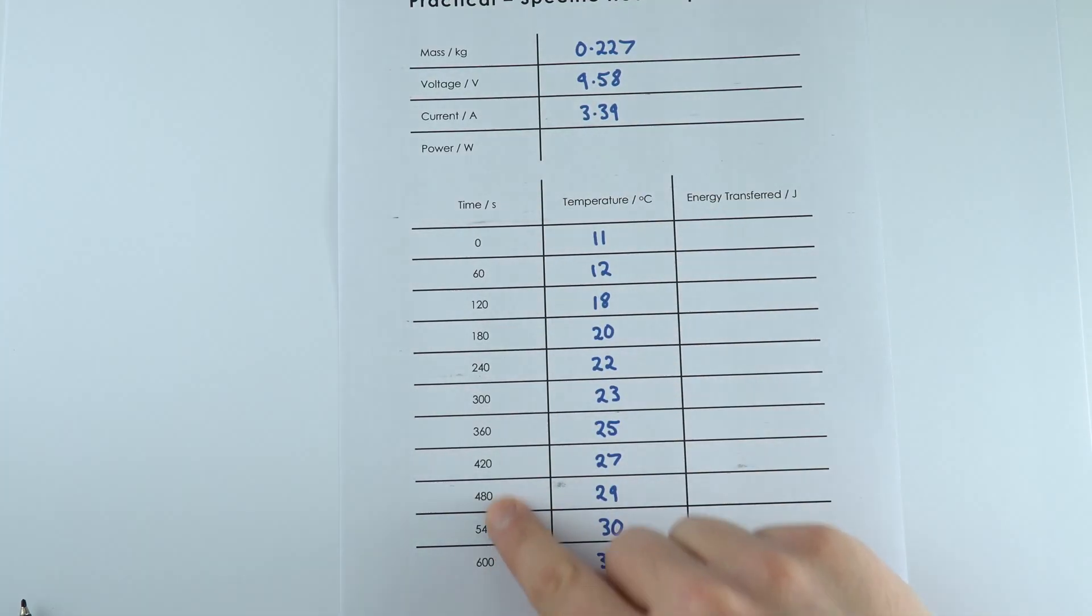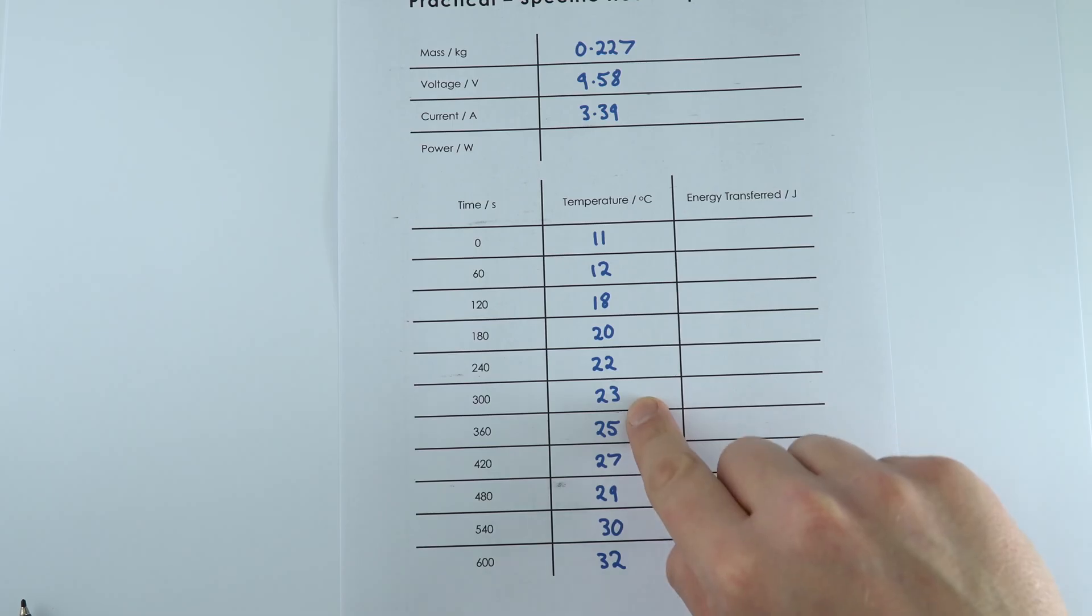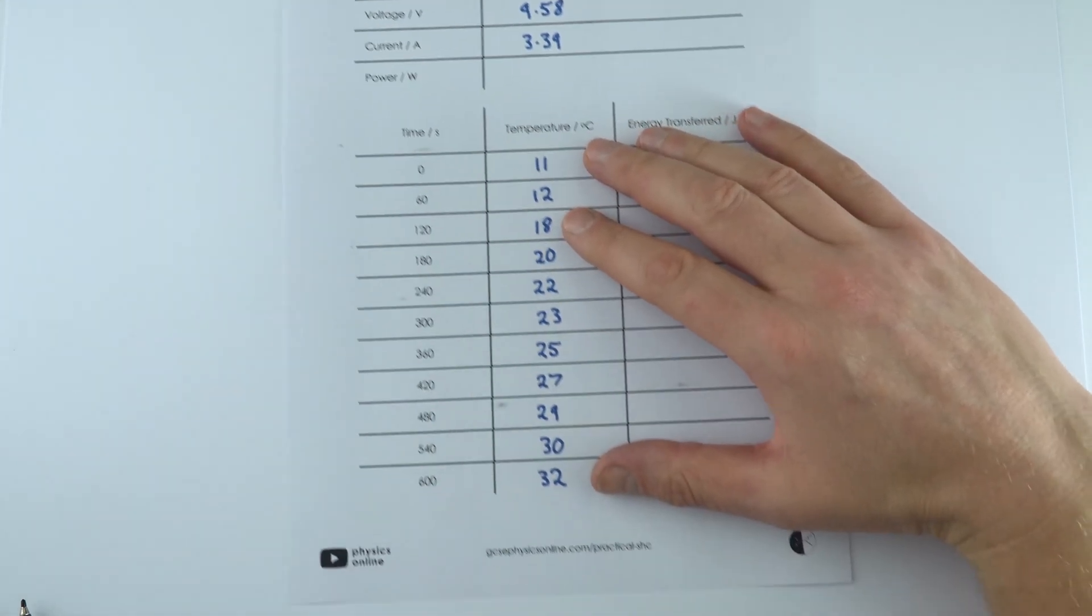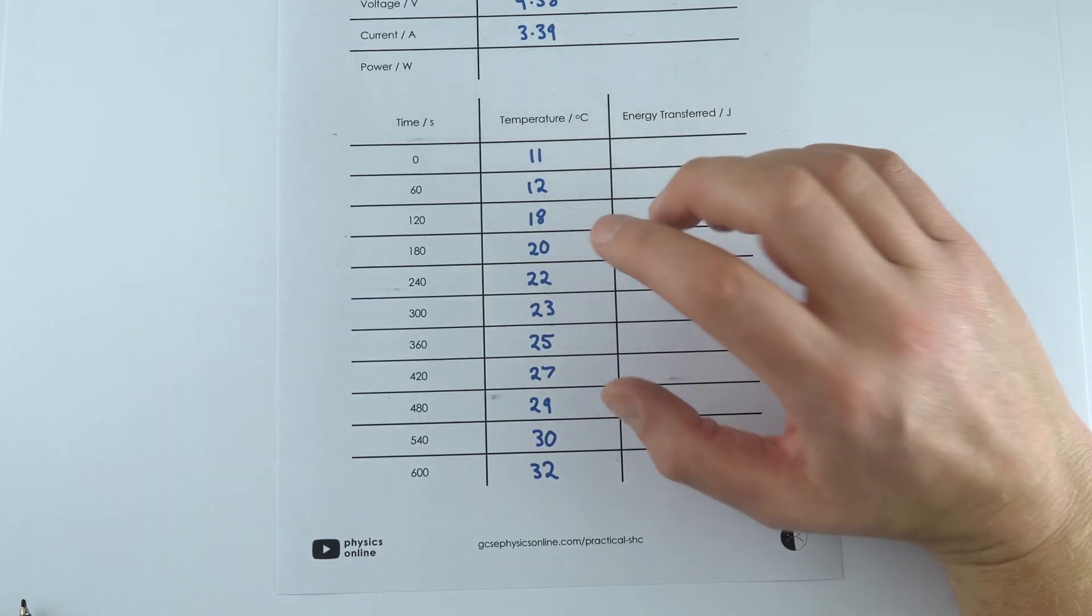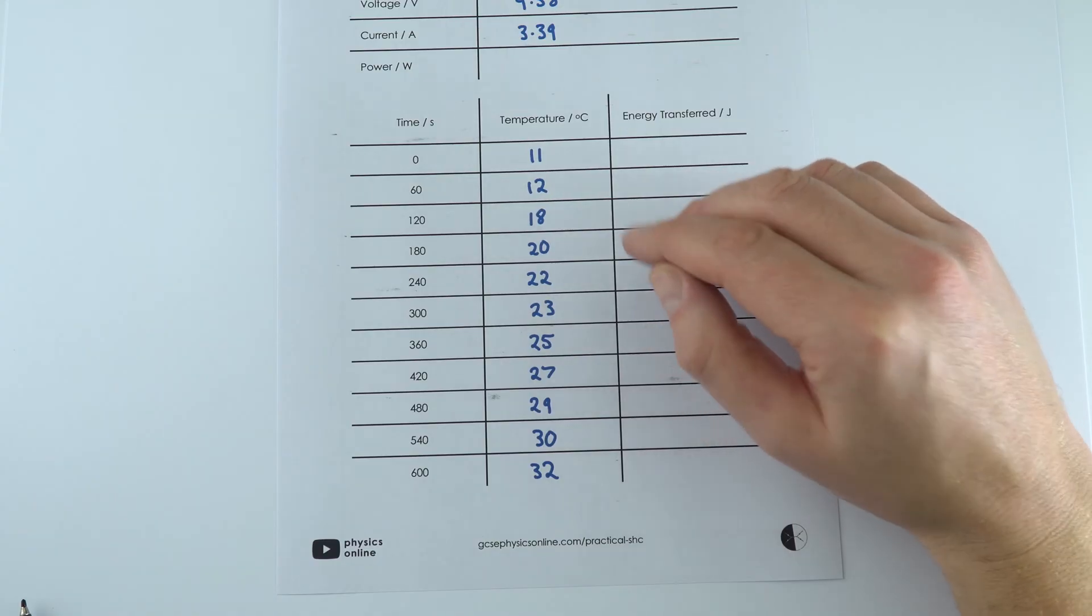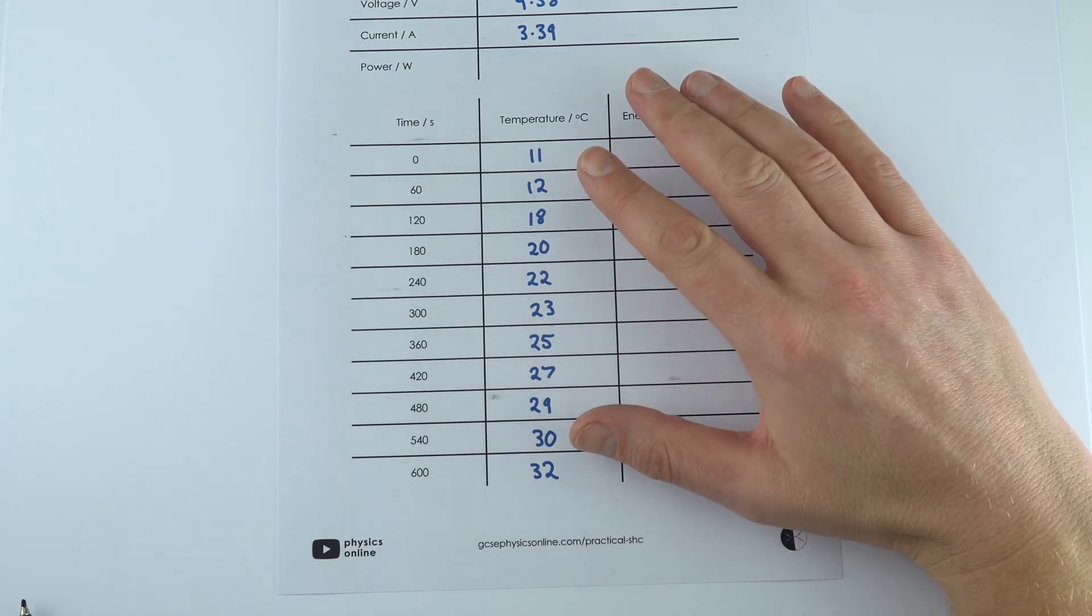And then we had the time in seconds and also the temperature to the nearest one degree. Sometimes that's a bit tricky, but these are the values I took by my judgment about if it was nearer to whichever value it might be.